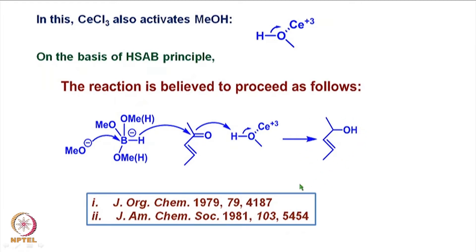The harder H⁻ interacts with the harder Lewis acid at the carbonyl carbon, which is activated by coordination of the oxygen (a harder base) with the harder acid H⁺ released by complexation of methanol with Ce³⁺, resulting in an allylic alcohol. This mechanism has been well studied and reported, and we can assume that based on the HSAB principle, the reaction proceeds in this fashion, allowing reduction of an alpha,beta-unsaturated ketone to specifically form the corresponding allylic alcohol.